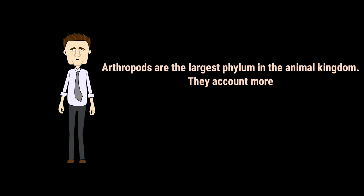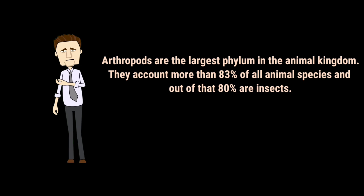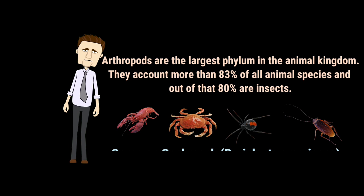Arthropods are the largest phylum in the animal kingdom. They account for more than 83% of all animal species, and out of that, 80% are insects. It includes lobster, crabs, spider, cockroach, etc.